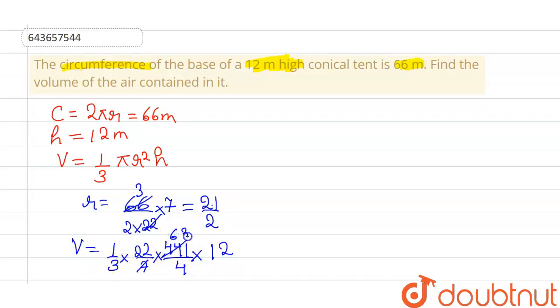63 times 22, 63 into 2 is 126, 6, 12 carry, 138. So the volume of the conical tent is 1386 meter cube. That's my answer. Thank you everyone, have a great day.